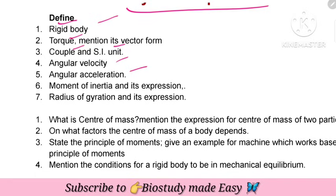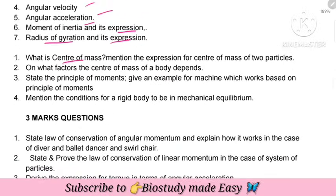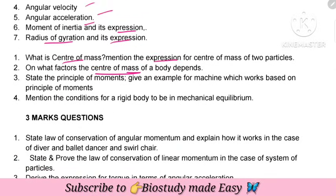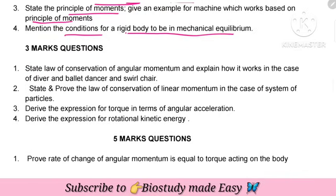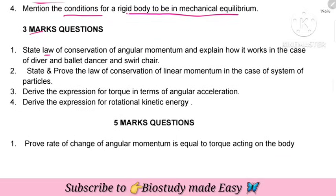Next, system of particles. Definitions: rigid body, torque in vector form, couple, SI unit of angular velocity, angular acceleration, moment of inertia with expression, radius of gyration with expression. Center of mass — what factors does it depend on? State the principle of moments, example of a machine based on the principle of moments, conditions for rigid body to be in mechanical equilibrium.